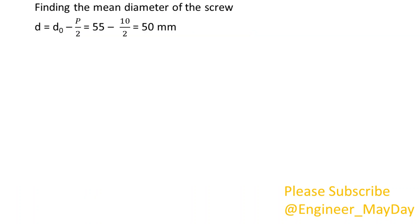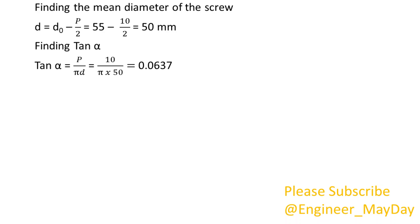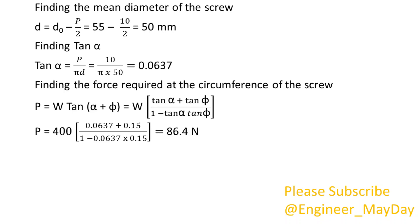Finding the mean diameter of the screw: D equals 50 millimeters. Finding tan alpha, which equals 0.0637. Finding the force required at the circumference of the screw: P equals 86.4 newtons.